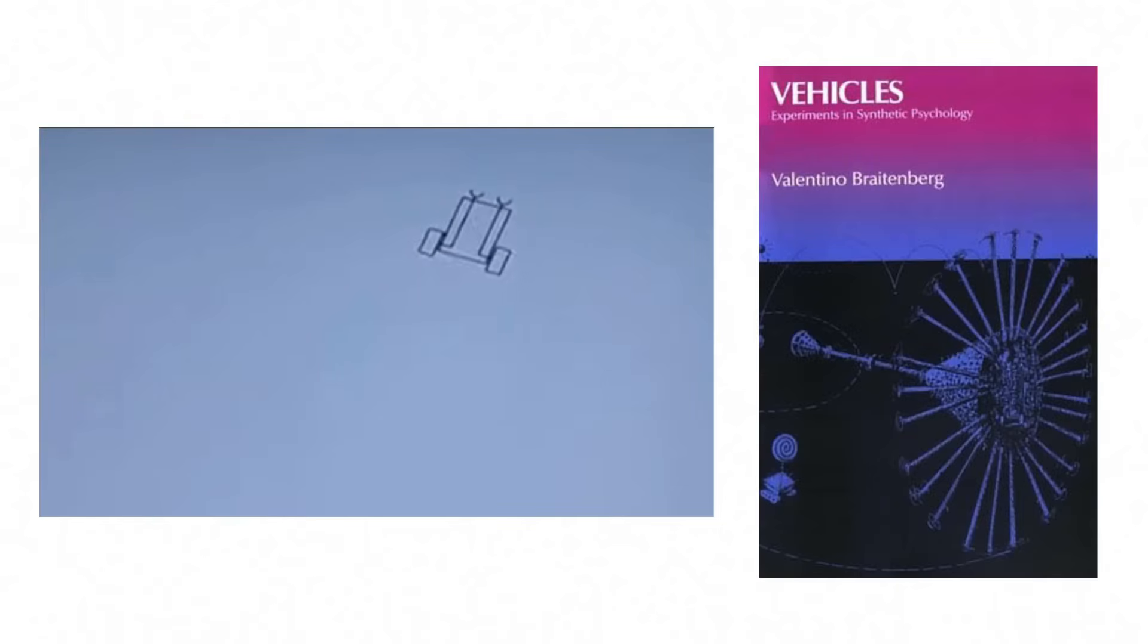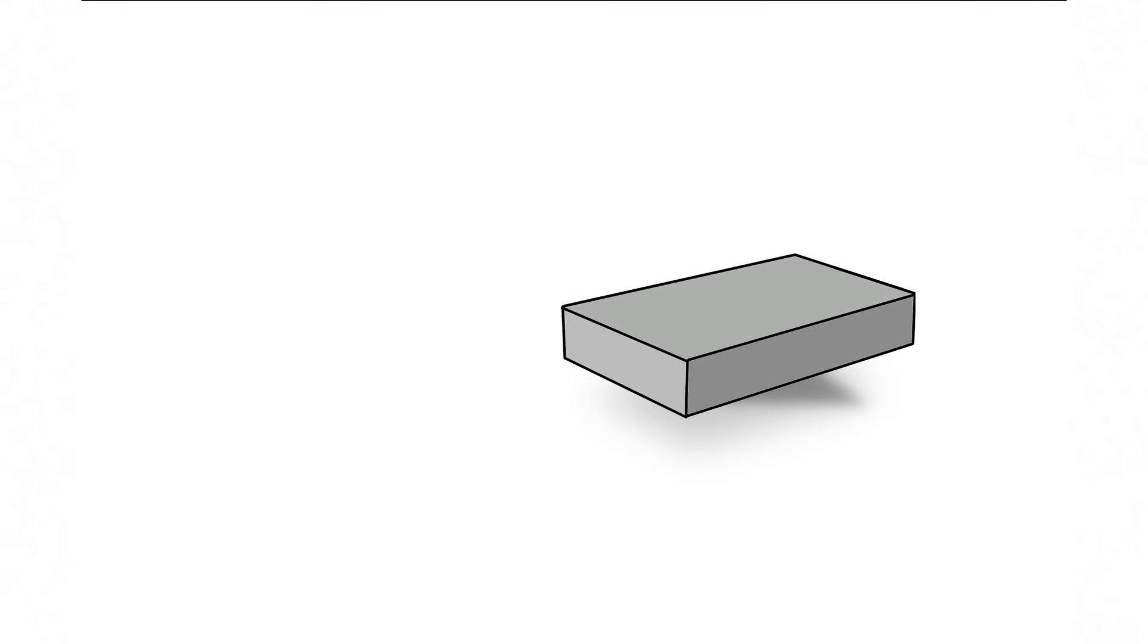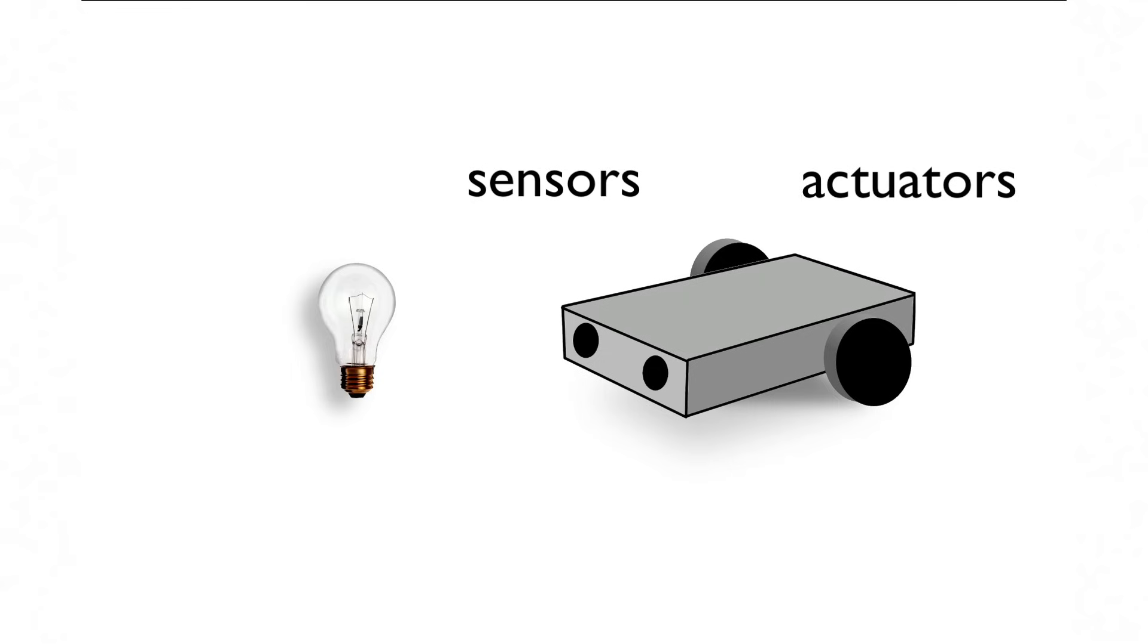Many robot folks and artificial life researchers are familiar with Valentino Breitenberg's vehicles. Simple car-like robots that are great at illustrating some basic concepts. There are two sensors in front that detect light, and two actuators in back that cause wheels to turn.